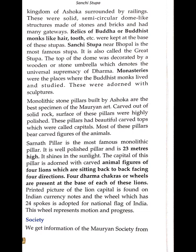The monolithic stone pillars built by Ashoka are the best specimens of Mauryan art. Carved out of solid rock, the surfaces of these pillars were highly polished with beautiful carved tops called capitals, bearing figures of animals. The Sarnath pillar is the most famous monolithic pillar — it is well-polished, 23 meters high, and shines in the sunshine.